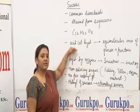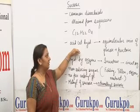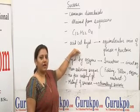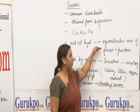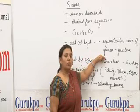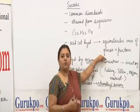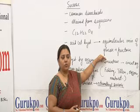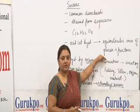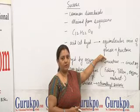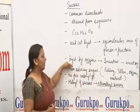Sucrose can be hydrolyzed by acid easily and it gives an equimolecular mixture of glucose and fructose. So if we want to produce glucose and fructose on a commercial basis, we obtain them from sucrose.